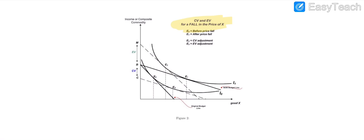You can see here, the consumer was initially at point E0, and the original budget line is tangent to the indifference curve, presenting utility I0. If the price of X falls and the budget line rotates out, the consumer's new equilibrium is at E1.